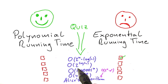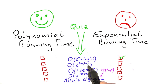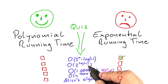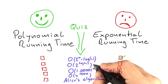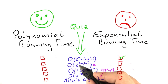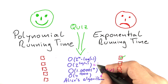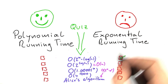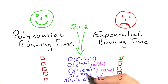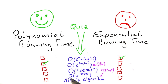Now what about the next one, 2 to the power of the logarithm of n? Well, 2 to the power of the logarithm of n is actually O of n, because having the logarithm in the exponent will actually cancel out the exponent. So that is O of n. So although it might look exponential if you don't look closely enough, that is actually a polynomial running time.